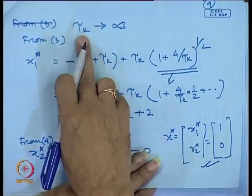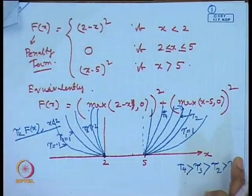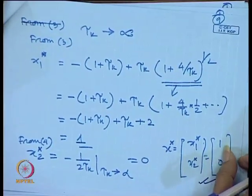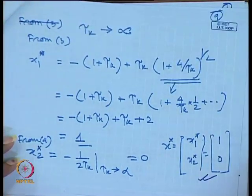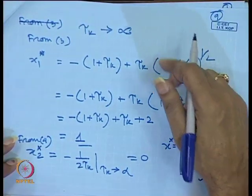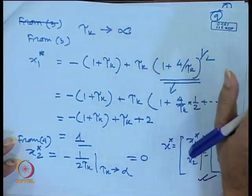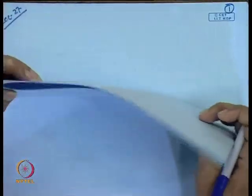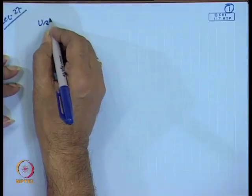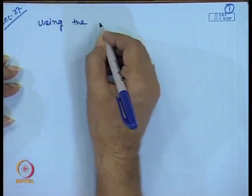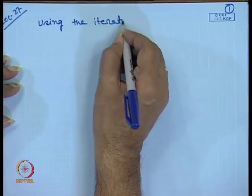Let us solve this problem using the iterative method. From the necessary conditions we expressed x₁ and x₂ in terms of tau_k. Now we will vary tau_k from a small value to very large (infinity) and see how to solve this problem iteratively.